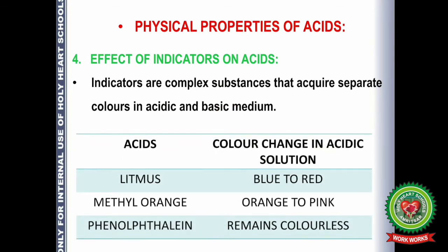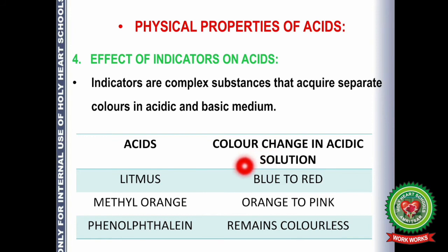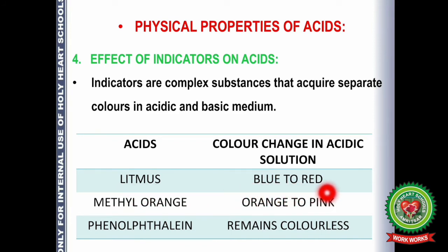When we drop litmus solution into an acid, it will turn red — if the litmus is blue it turns red, or if it is neutral litmus it changes from purple to red. Methyl orange is orange in color and will change to pink when dropped into acid. Phenolphthalein is colorless, so when we drop phenolphthalein into an acid it will remain colorless.